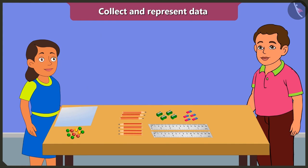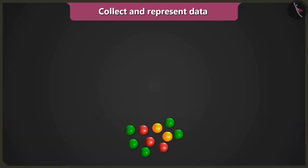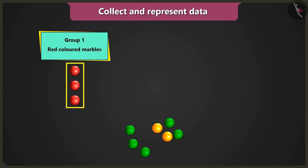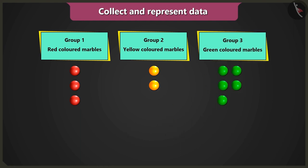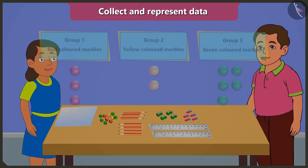Bubbly, first of all, you have to make groups of same colored marbles. First group of red colored marbles, second group of yellow colored marbles, and third group of green colored marbles.